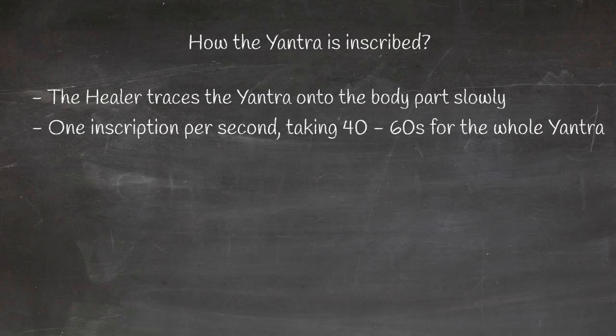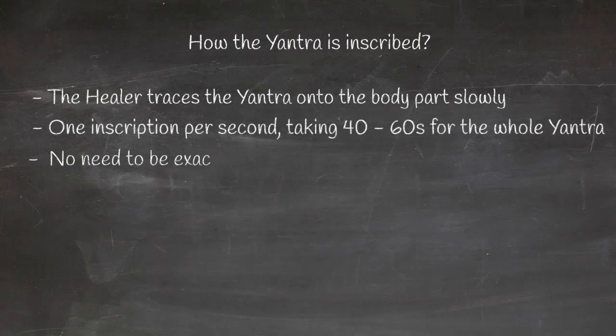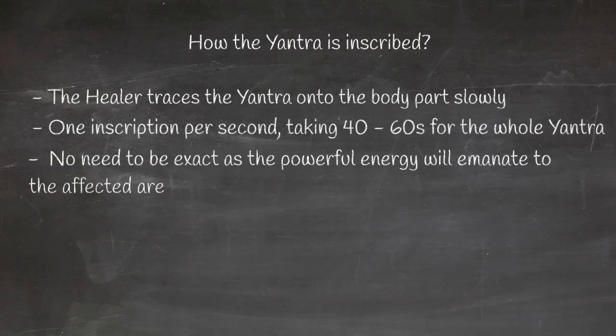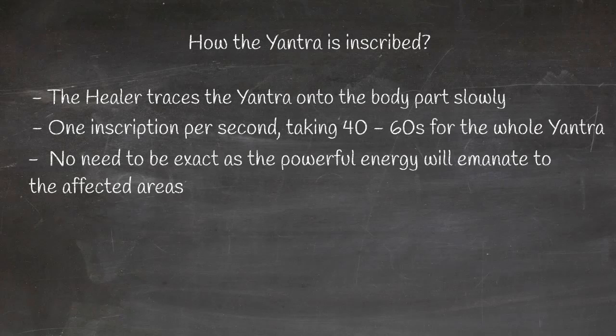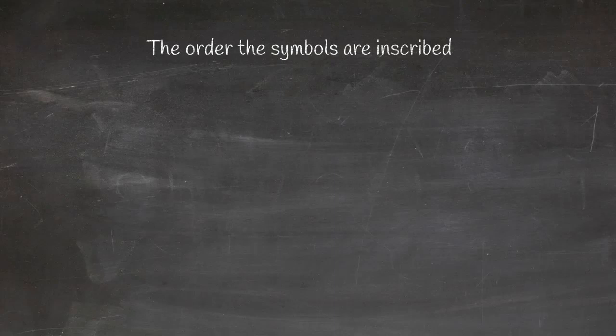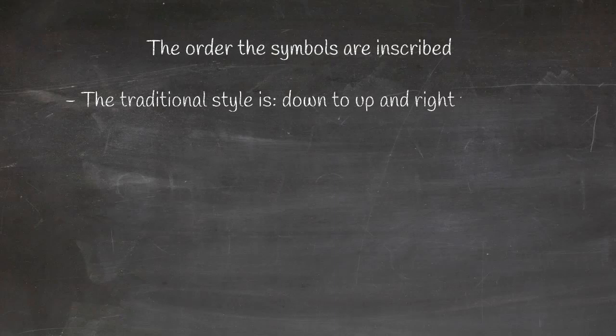The diagrams we will present show roughly the position the inscription should be placed. You do not have to be exact, as the energy is very strong and powerful enough to travel to the surrounding areas. We have put a nominal ordering in the following diagrams on how the strokes should be performed. It is usual for the Ayyanist to inscribe the symbols from down to up and right to left. Some Ayyanists believe that the order of the inscription is important, whilst others believe that it is the overall message conveyed that is the key, so order is irrelevant.